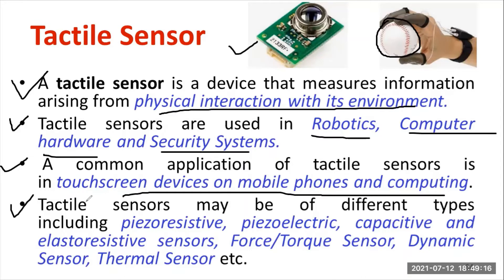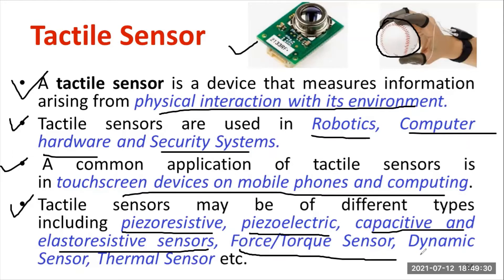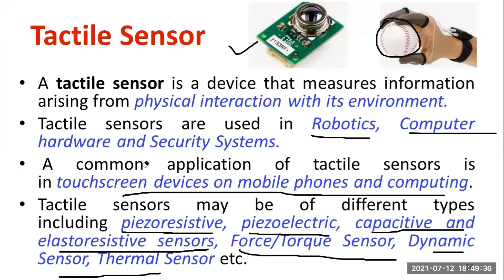Different types of tactile sensors are available, such as piezo-resistive type, piezo-electric type, then capacitive and electro-resistive sensors. These capacitive and electro-resistive sensors are applicable in your smartphone. There are also force torque sensors, dynamic sensors, and thermal sensors.